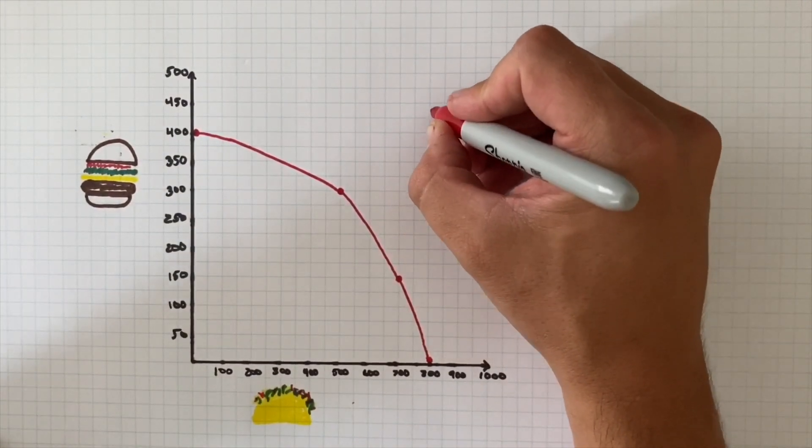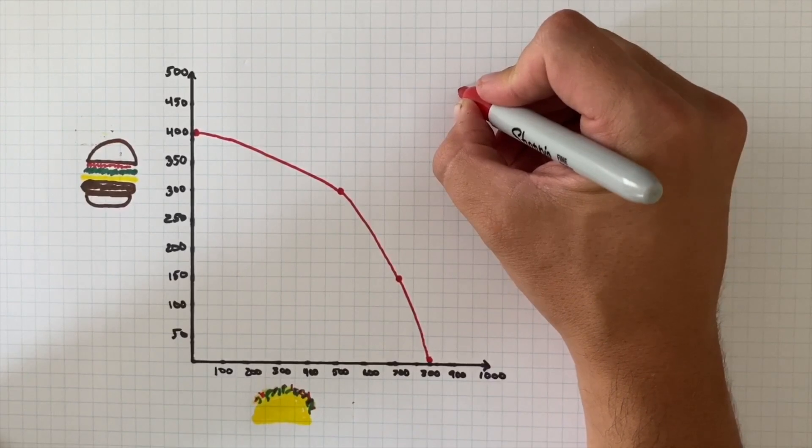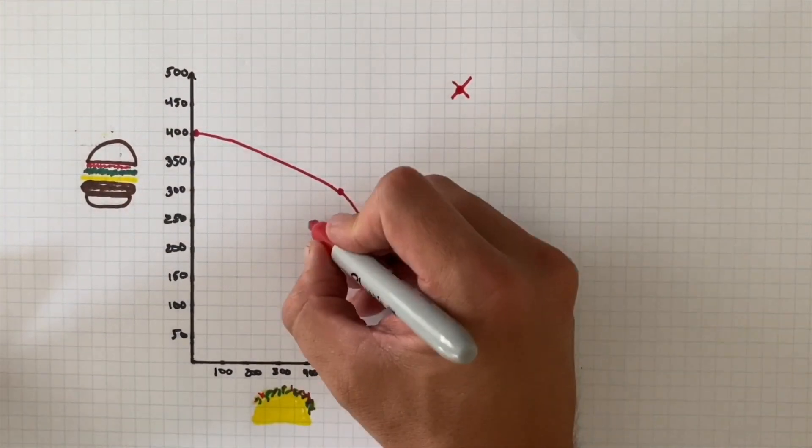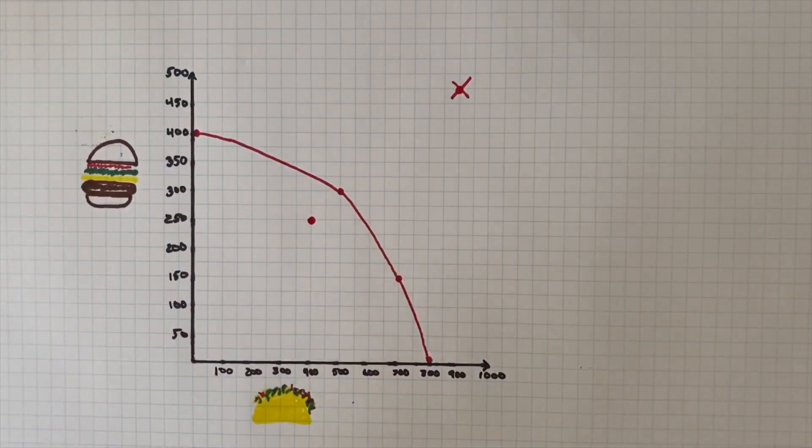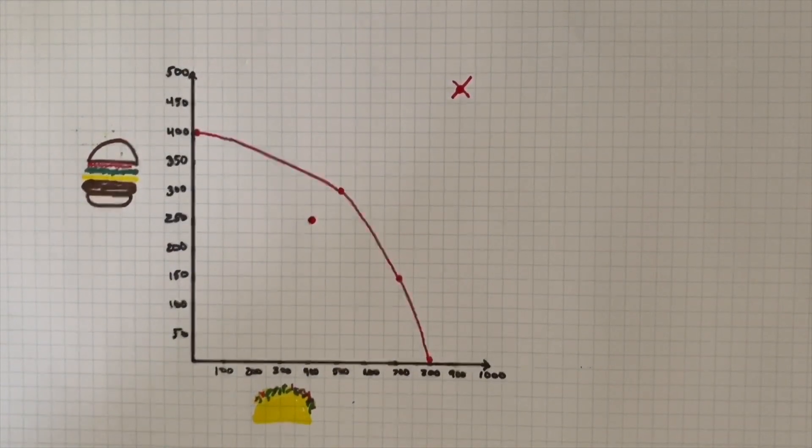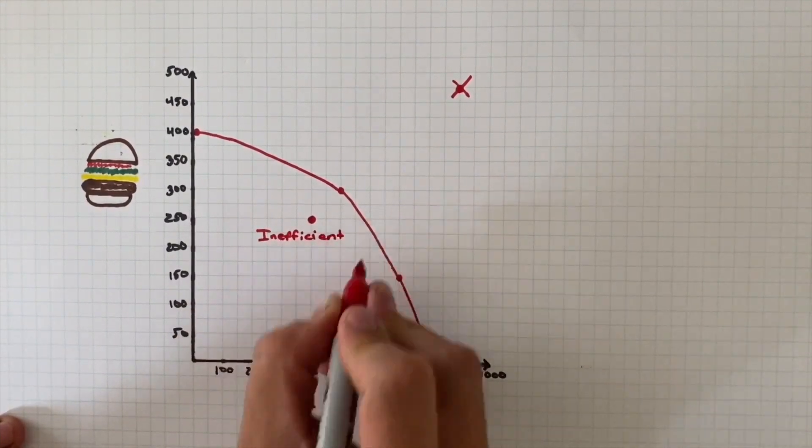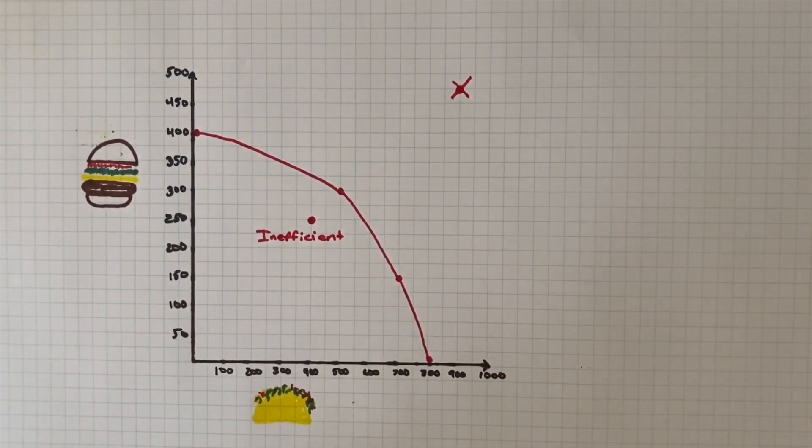Anything outside of that red line is going to indicate something that's not possible given the current resources that we have. Anything inside of the line is going to be indicative of inefficient resource allocations because we could be making more hamburgers or tacos, but for whatever reason we're not.